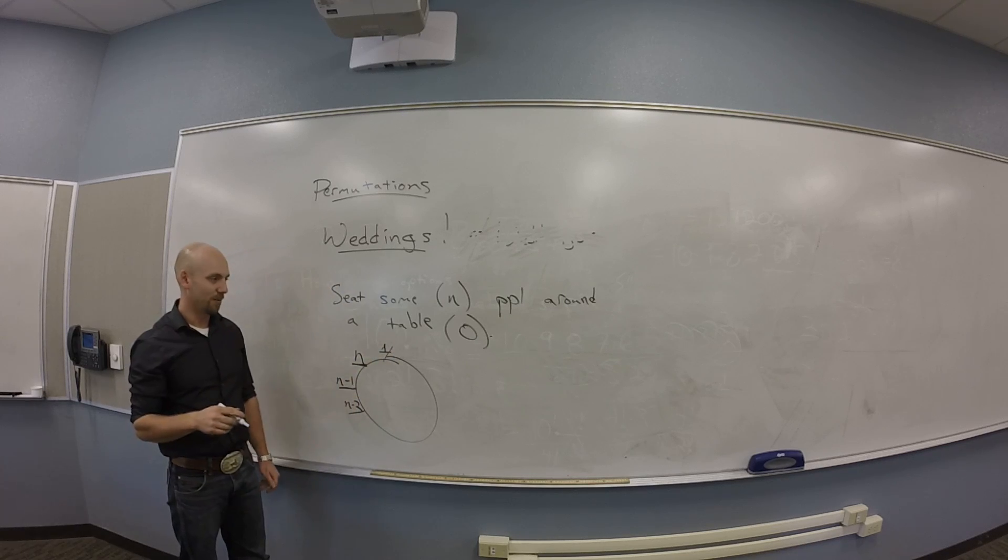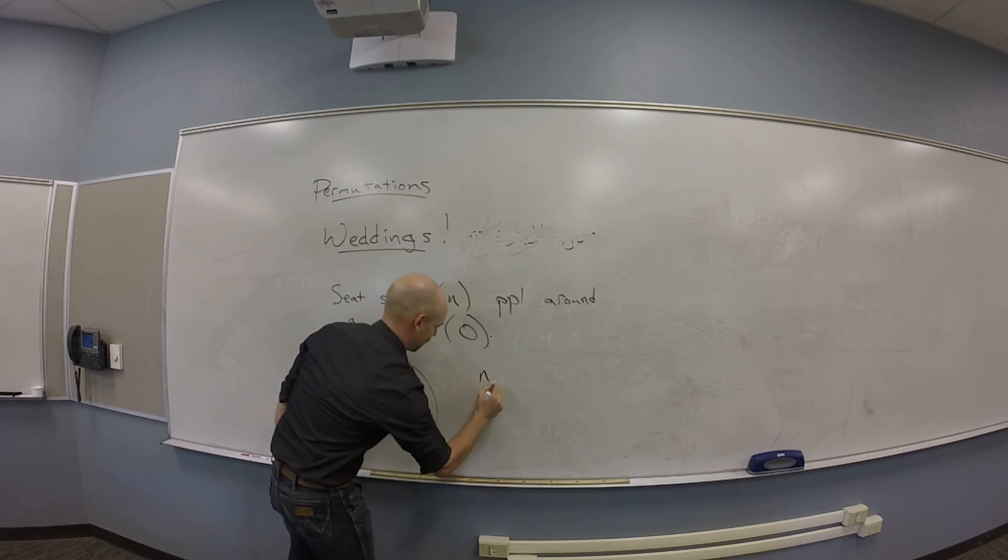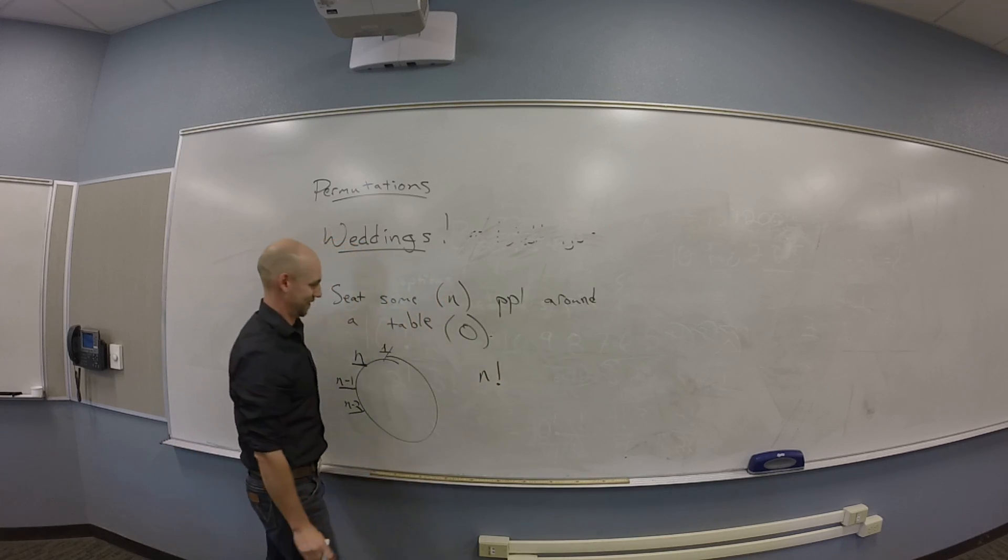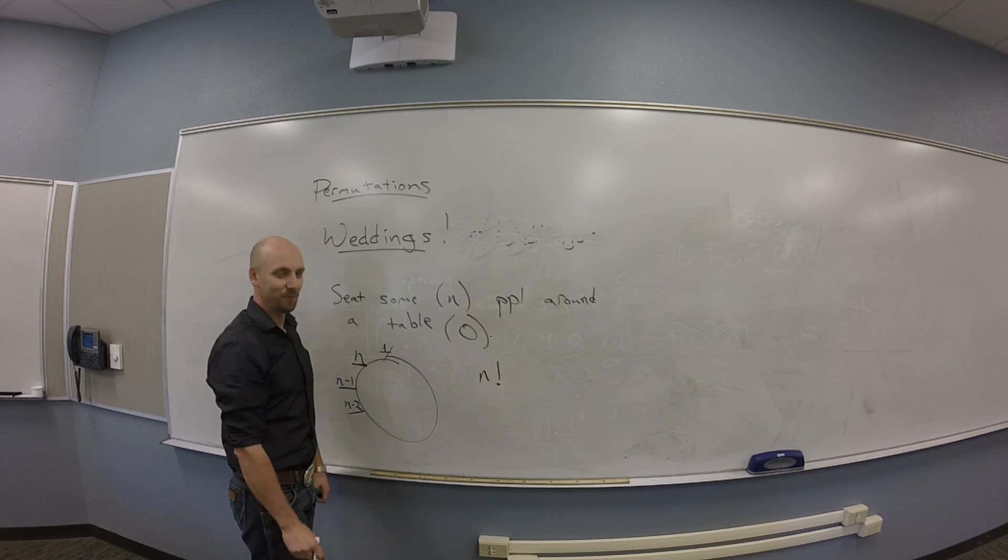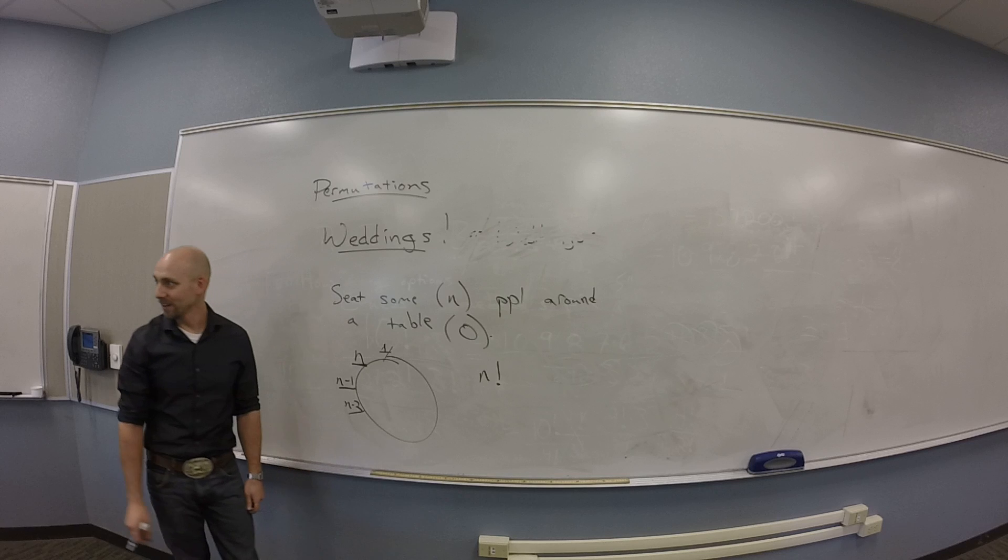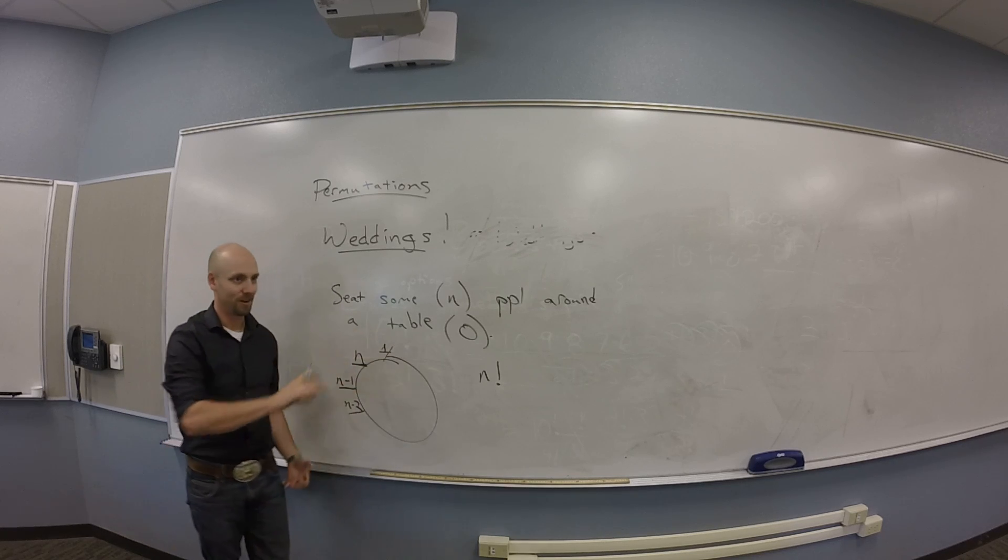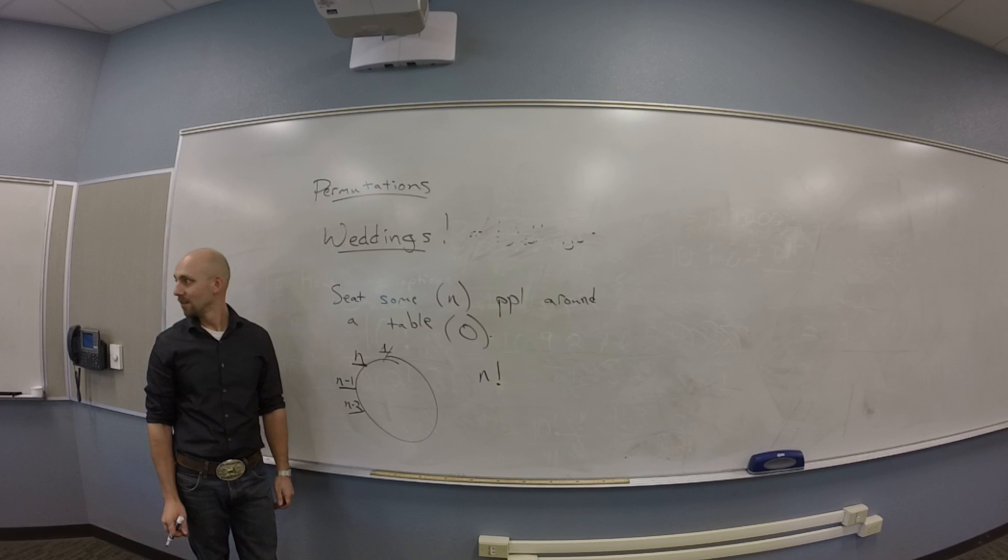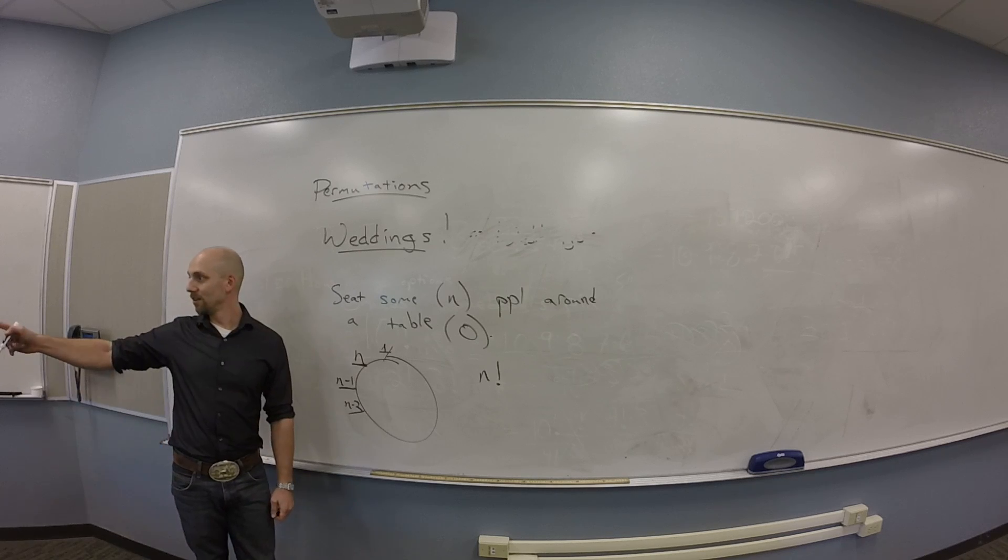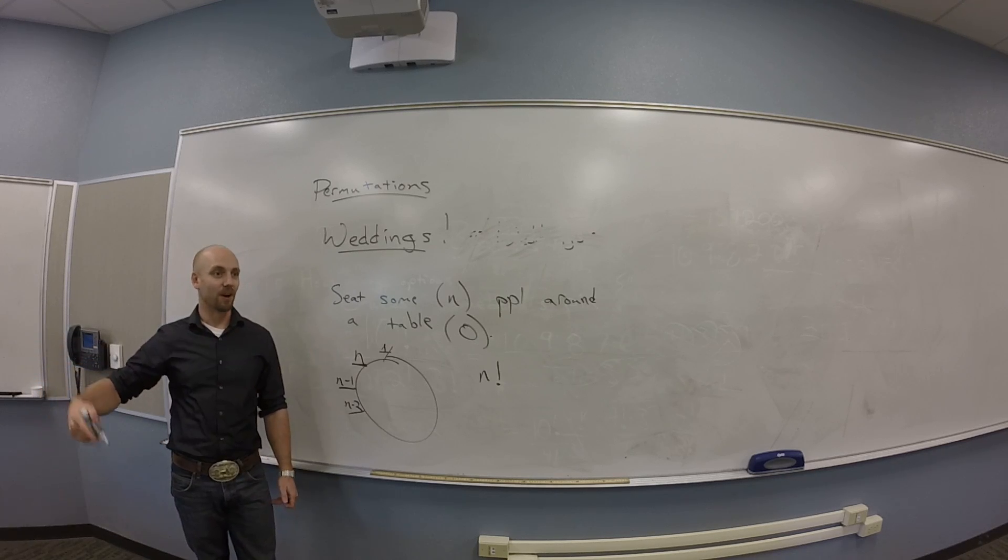Okay, so that feels like how many? N factorial. Wait, what? Why is it different? It should be different. What's different about this that I haven't accounted for? Well, you're treating it like a line. You can spin them around. Good. I'm treating this like a line, right?